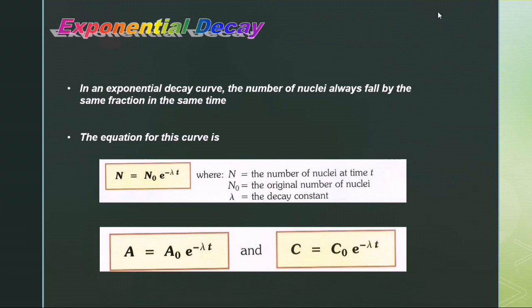The equation for this curve is N = N₀e^(-λt), where N is the number of nuclei at time t and λ is the decay constant. We can also write this equation in terms of activity or recorded count rate: A = A₀e^(-λt) and C = C₀e^(-λt).